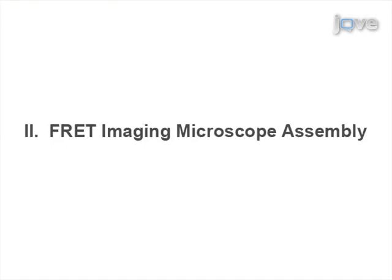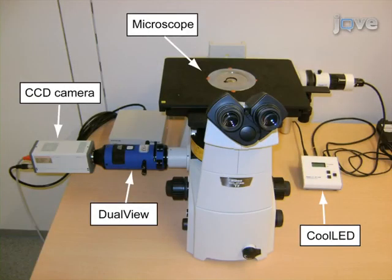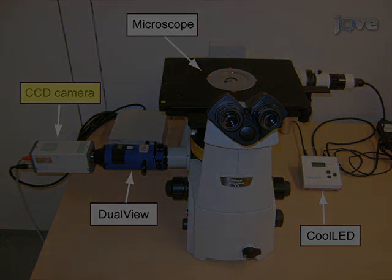Now we will show you how to set up a FRET system and how to use it for simple imaging experiments. In principle, any inverted fluorescence microscope that has a camera port can be adapted for FRET imaging. The final setup should include the following crucial components: a microscope, a light source with or without an additional shutter, a beam splitter for emission light, and a CCD camera.